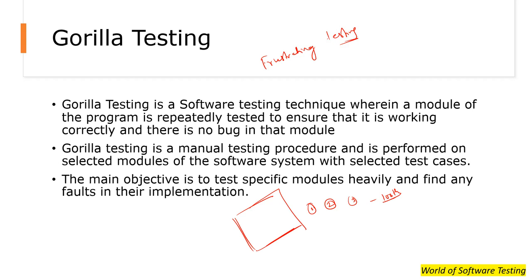Gorilla testing is similar to monkey testing; the only difference is that it tests particular modules, whereas monkey testing tests the system as a whole. Each module in the product is picked and random valid and invalid inputs are fed into it until the module crashes. It is a rigorous manual test to check the robustness of the application.